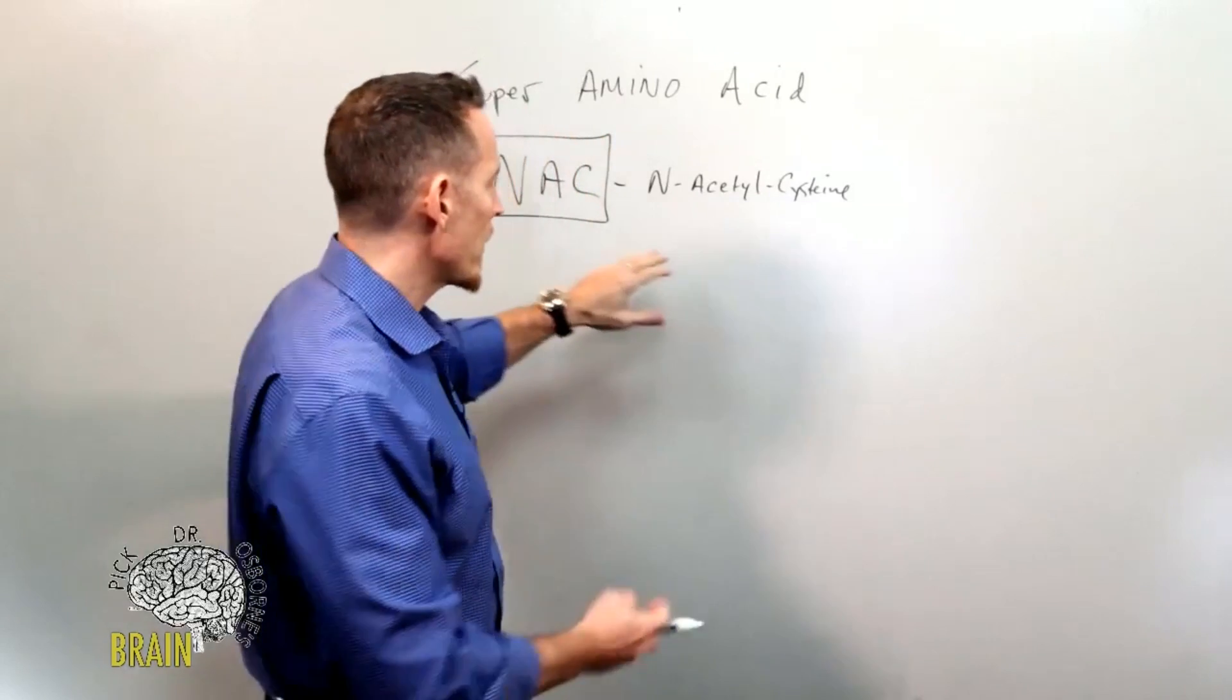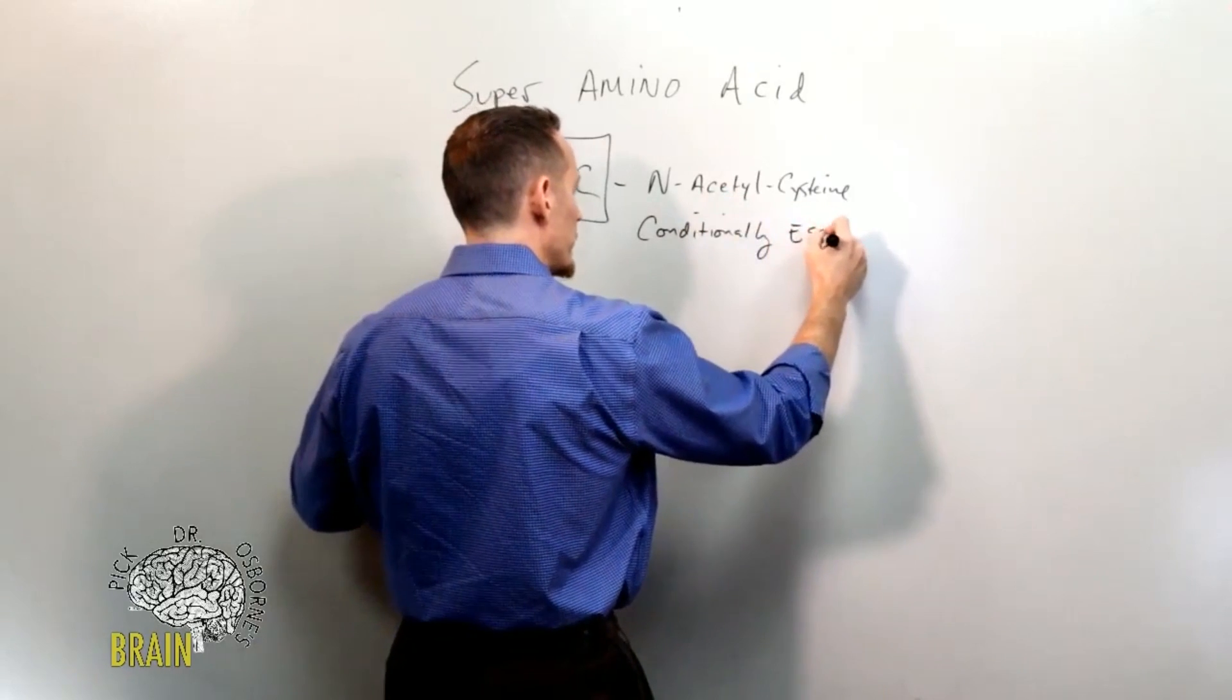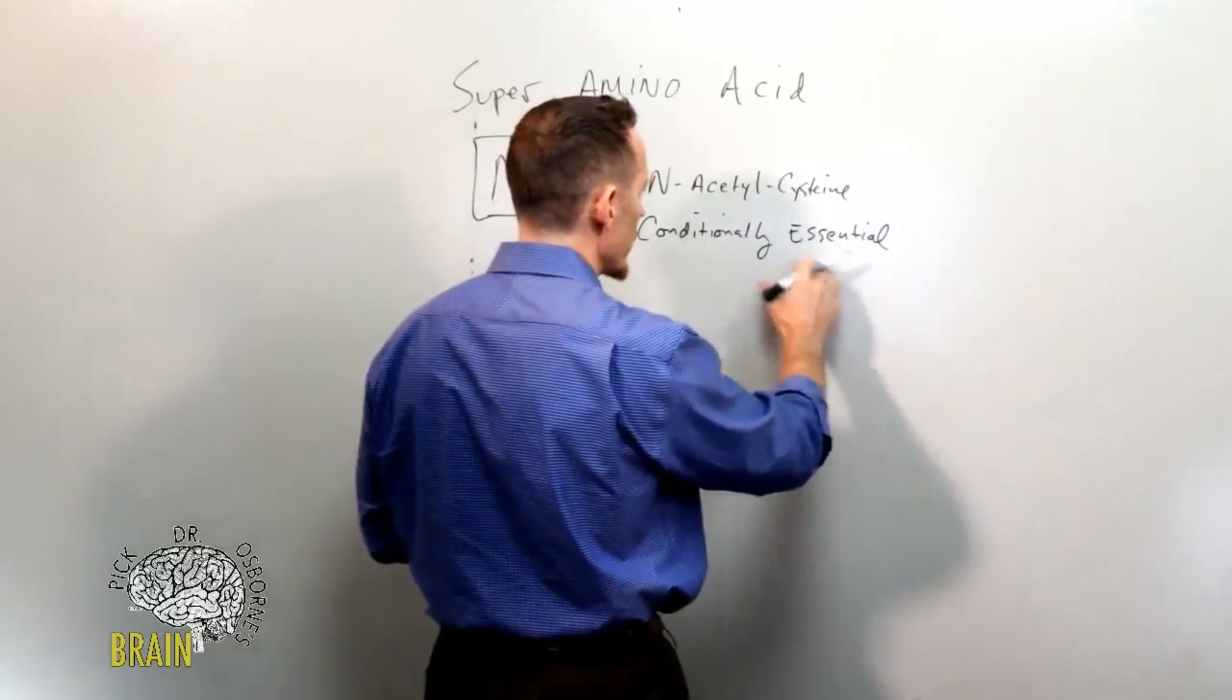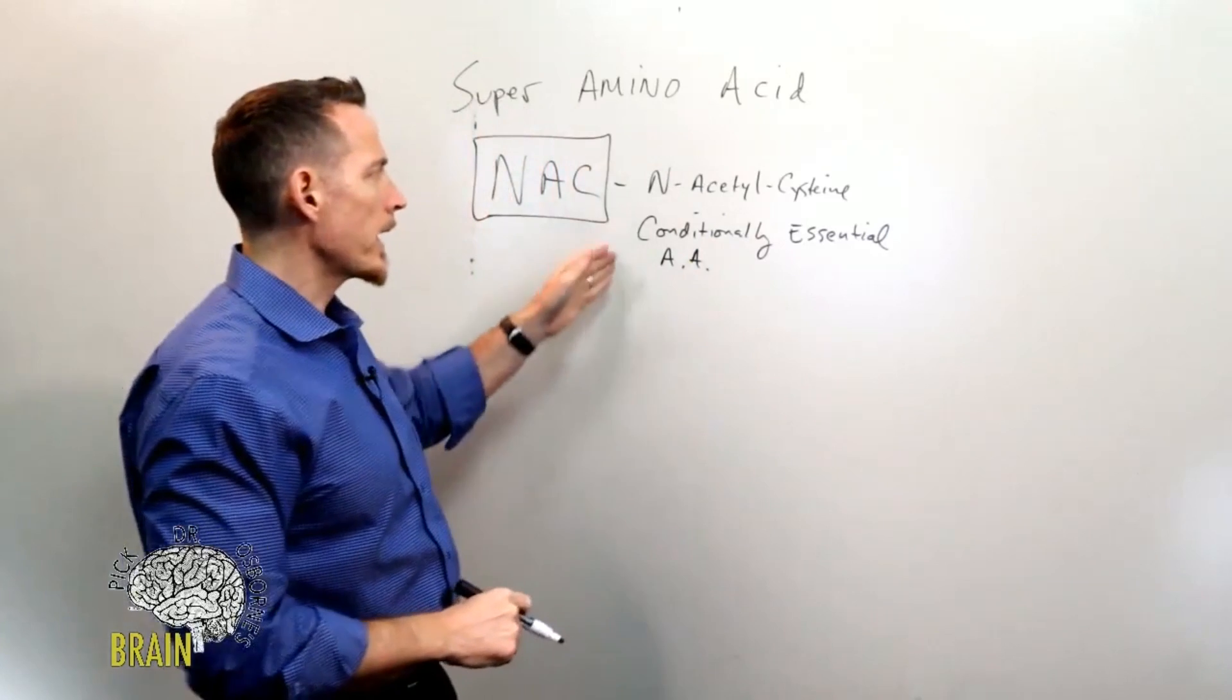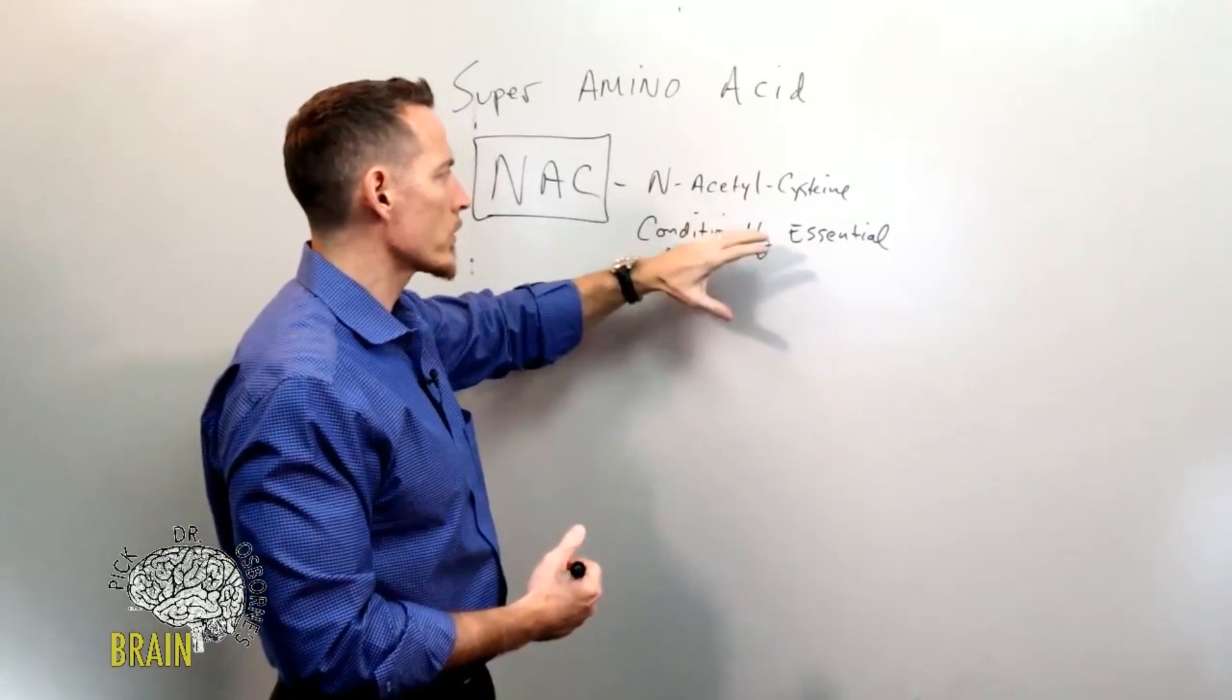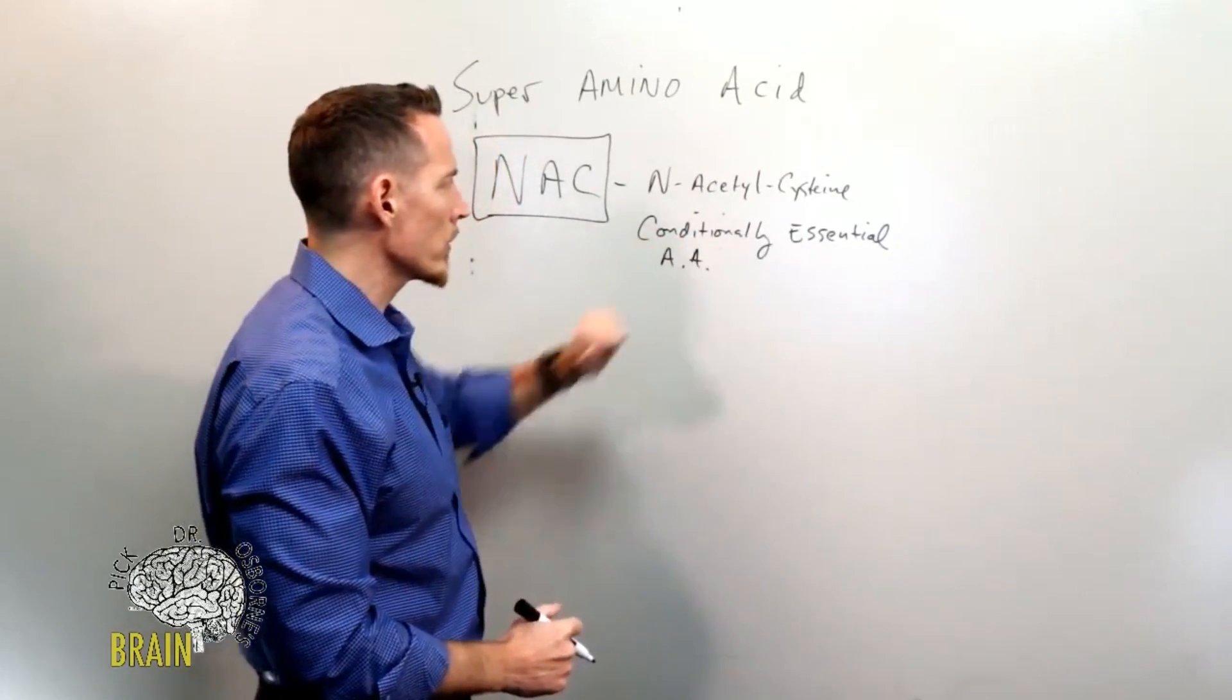But what happens is this is actually referred to as a conditionally essential amino acid. N-acetylcysteine and glutamine are probably the two best examples of conditionally essential amino acids, meaning under certain conditions, under certain circumstances, your body can't produce enough to meet the demand to help you overcome problems. So conditionally essential - under certain conditions we can't produce enough, and that's where supplementation can be very beneficial.